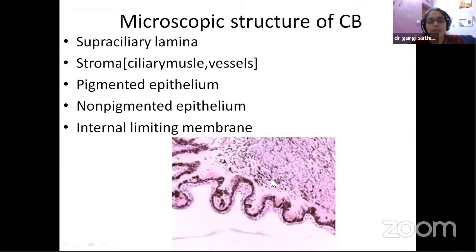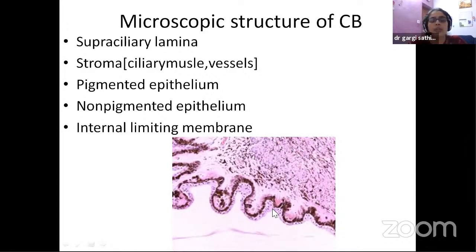Microscopically, it has got five layers. The anterior limiting layer of the iris continues here as the supraciliary lamina. Then you have the stroma. Then you have the outer pigmented epithelium and the inner non-pigmented epithelium and the internal limiting membrane. The outer and inner should always strike you — outer means towards the sclera and inner means towards the aqueous humor.